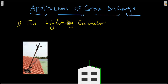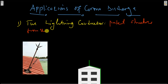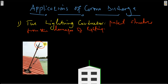One of the applications of corona discharge is the lightning conductor. You've probably seen a structure of this kind on roofs. This is called the lightning conductor, and we use it to protect structures like buildings, bridges, and tall trees from the damages of lightning. As you notice, on the lightning conductor, we have very sharp pointed ends. This is done so that corona discharge can easily occur, and we'll see how corona discharge helps in the action of the lightning conductor. Take note of the sharp pointed spikes at the top.